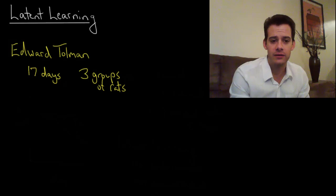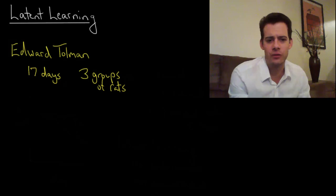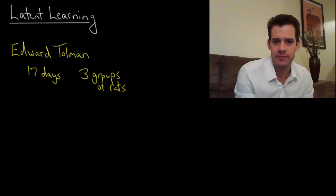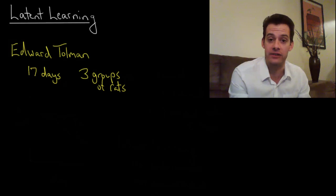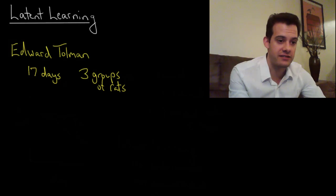The first study that we'll look at was conducted by Tolman and Charles Honzik. They had three groups of rats and put these rats into a maze. They ran the rats in this maze every day for 17 days.